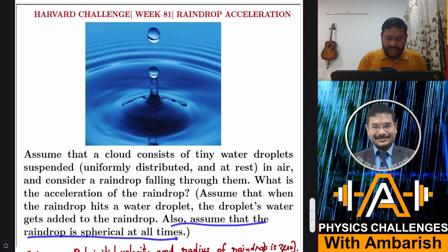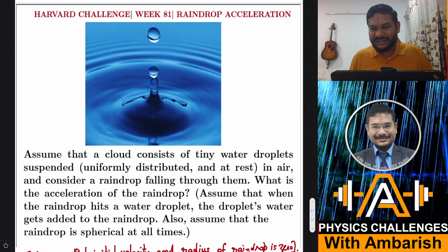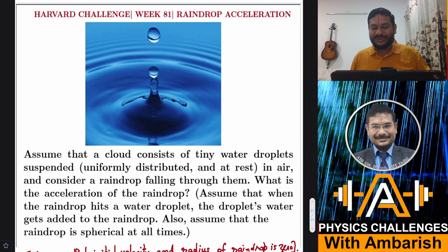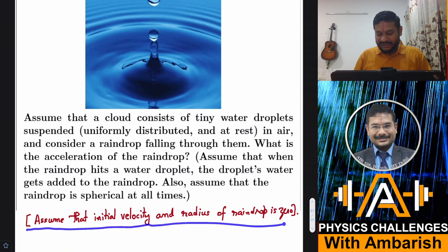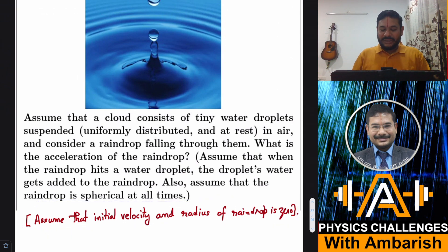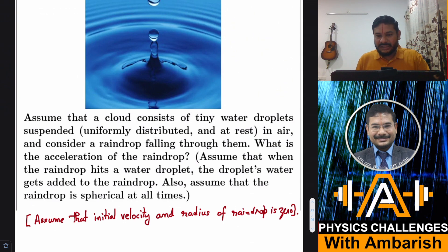Also assume that the raindrop is spherical at all times. This is the exact language of the problem, though I would add a little clarification so the language is crystal clear, because many times students come to know about the correct interpretation only after looking at the solution. Another assumption you need to make is that the initial velocity and radius of the raindrop is zero — that's not explicitly mentioned in the problem, but it's a reasonable assumption given the process of raindrop formation.